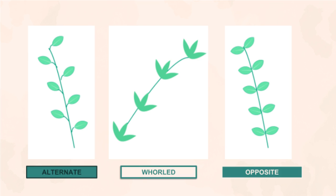The arrangement of the veins in the leaf can also vary and they can be either pinnate or palmate. In pinnate leaves we can observe a clear midvein running through the leaf, also called the primary vein. From the primary vein there will be a cluster of faint and delicate secondary veins branching out from the midrib. In palmate leaves we can see several primary veins, unlike pinnate leaves which have just one primary vein.